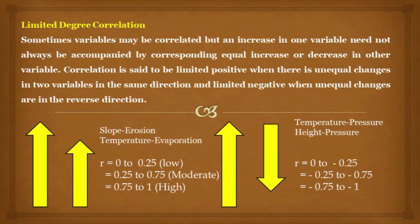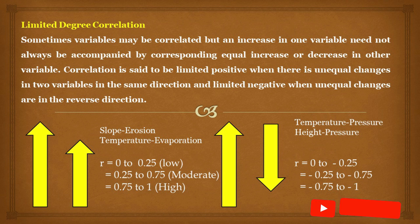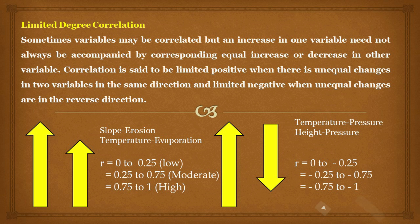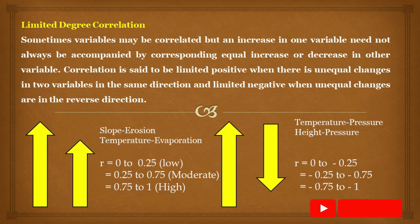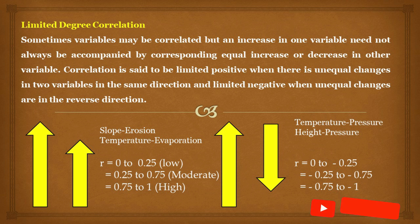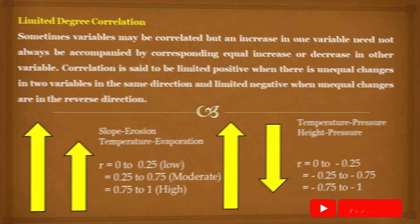The third type is limited degree of correlation. Sometimes variables may be correlated, but an increase in one variable need not always be accompanied by a corresponding equal increase or decrease in the other. Correlation is limited positive when there are unequal changes in the same direction, and limited negative when unequal changes are in the reverse direction. High limited degree correlation ranges from ±0.75 to ±1, moderate degree from ±0.25 to ±0.75, and low degree from 0 to ±0.25.